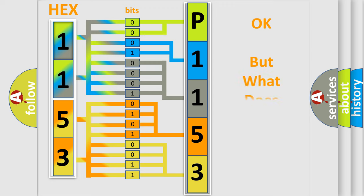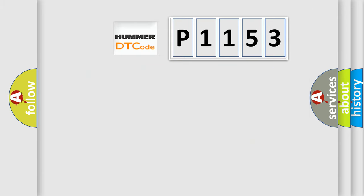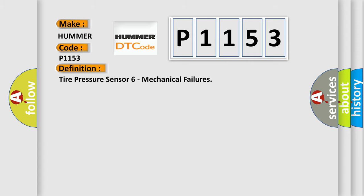We now know in what way the diagnostic tool translates the received information into a more comprehensible format. The number itself does not make sense to us if we cannot assign information about what it actually expresses. So, what does the diagnostic trouble code P1153 interpret specifically for car manufacturers? The basic definition is: Tire pressure sensor 6 mechanical failure.